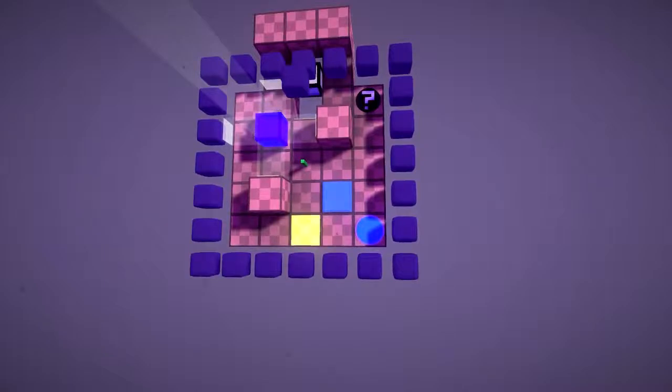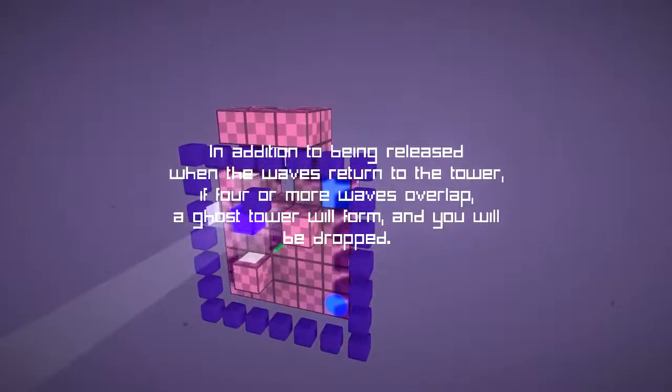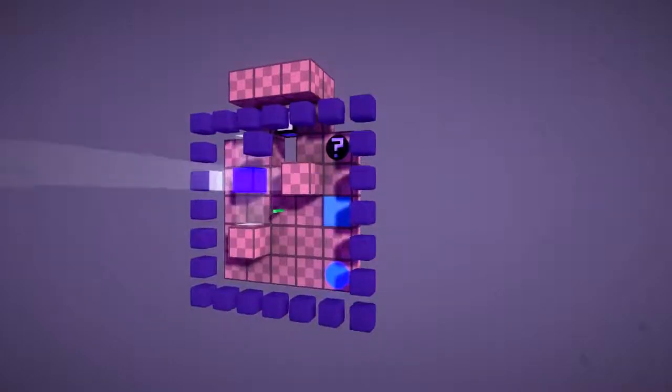To start with though, we should read the message. Those are always important. Something, something, something with four waves overlap, they create another tower. Okay, great. So we need to get four waves to overlap. Well, that's a hint anyway.